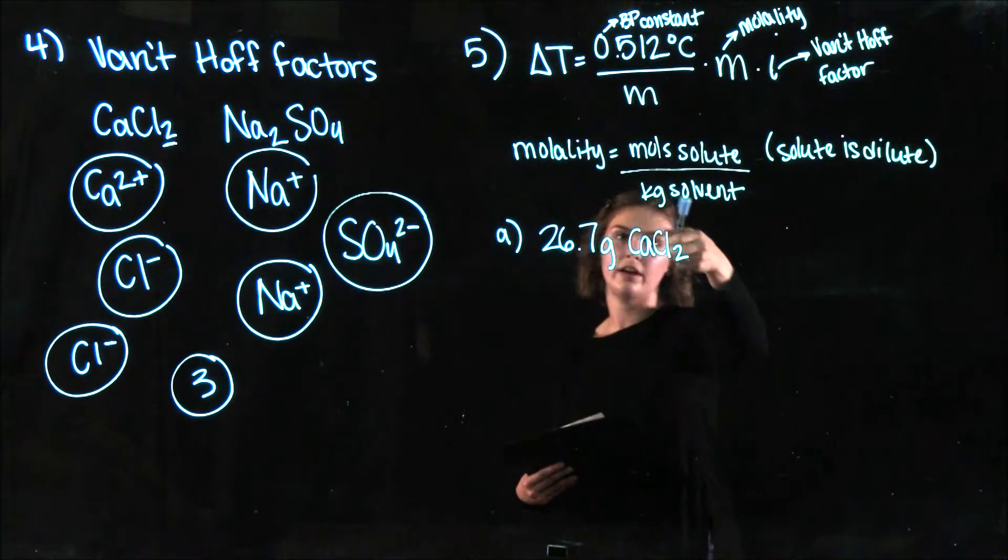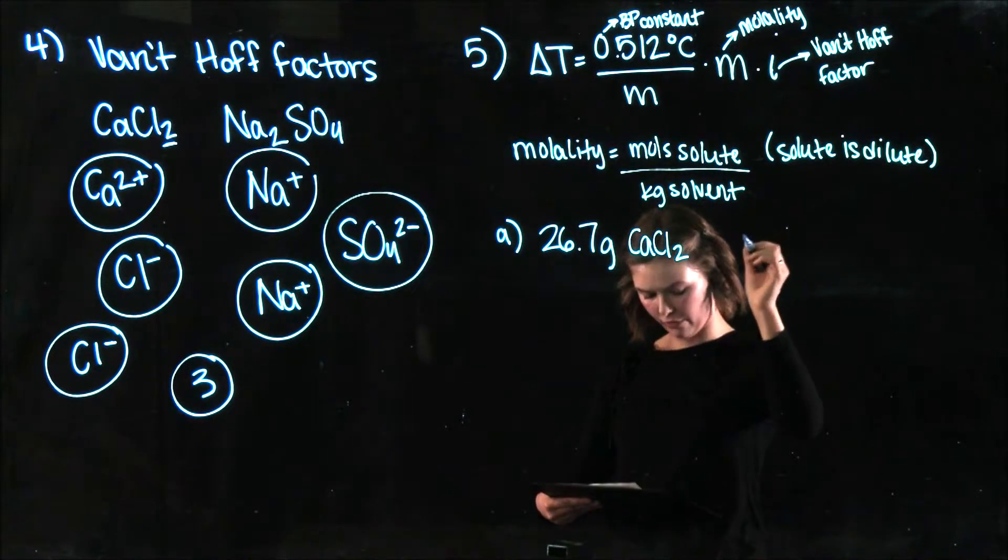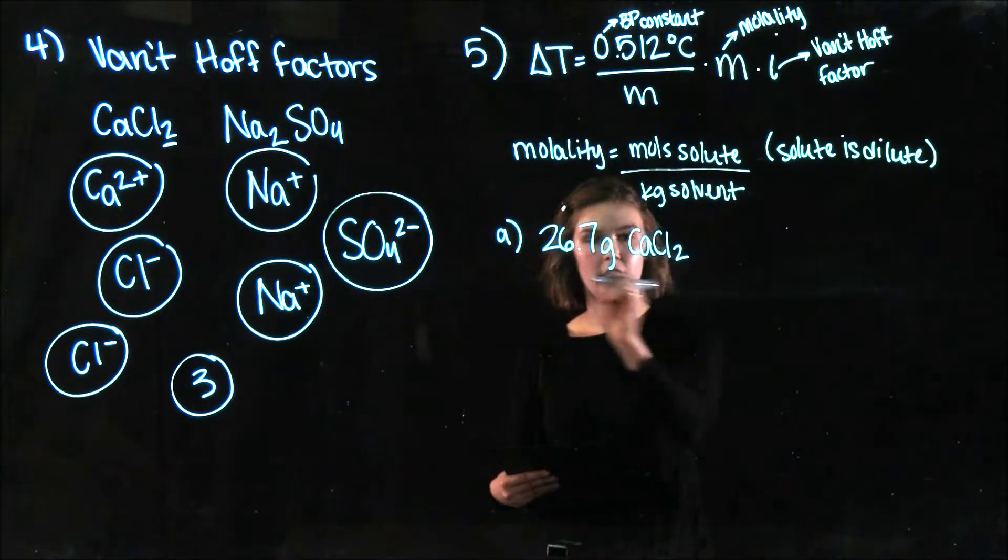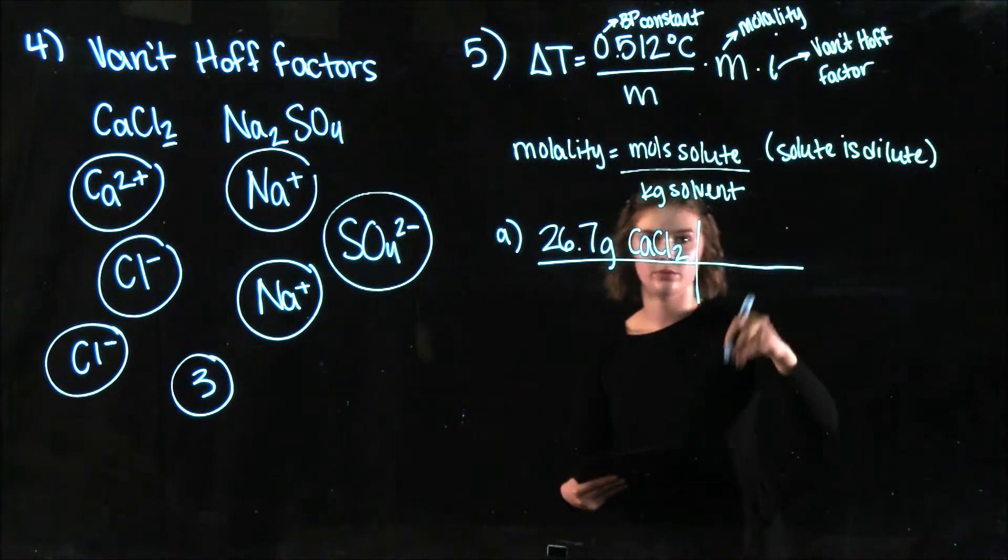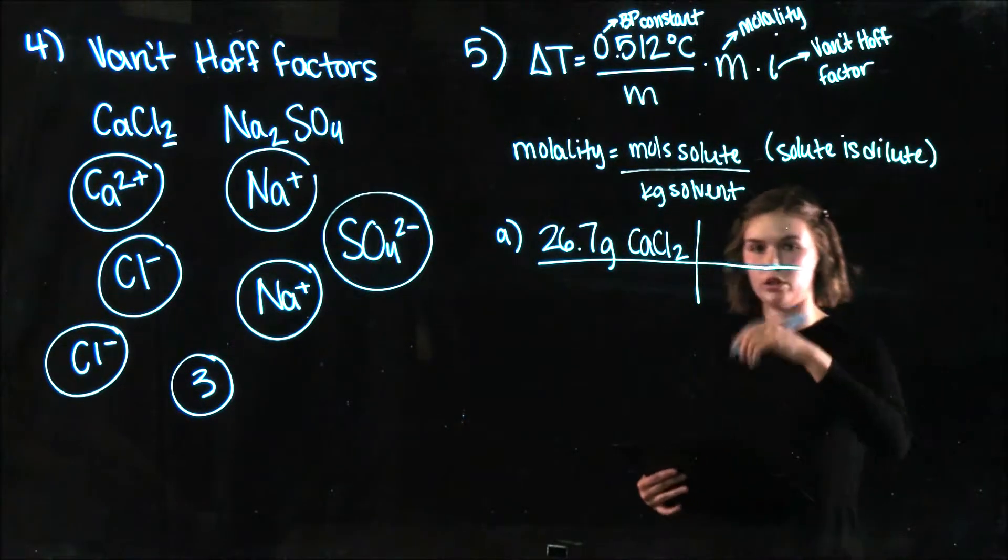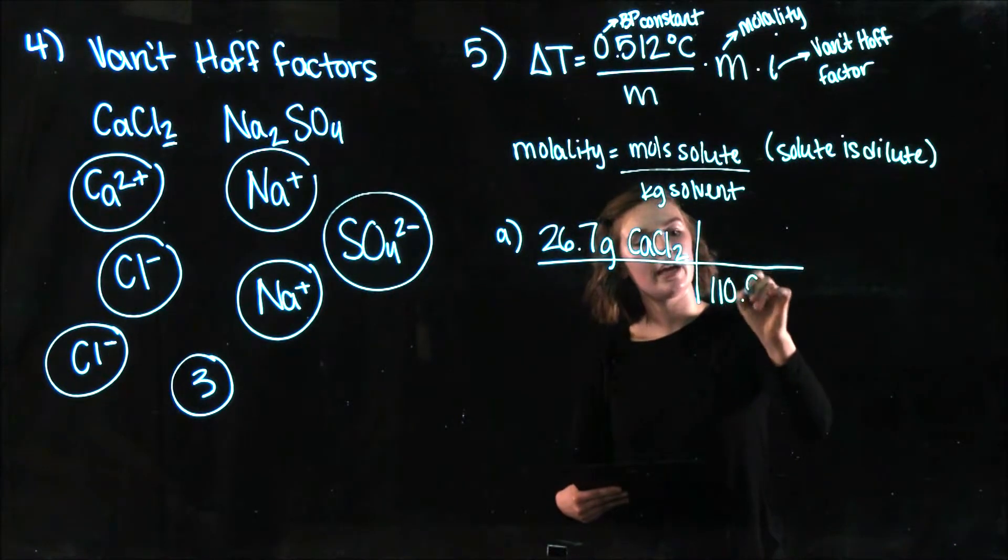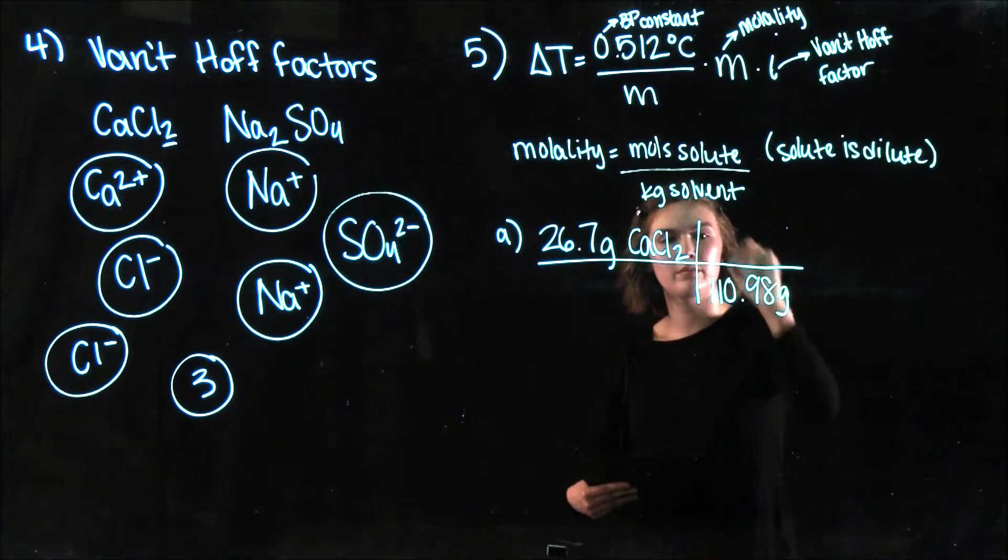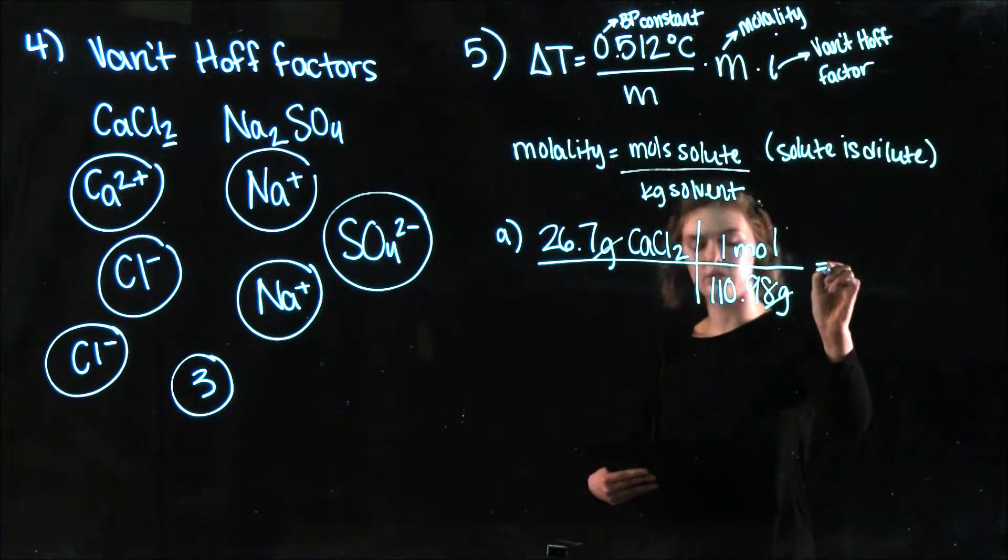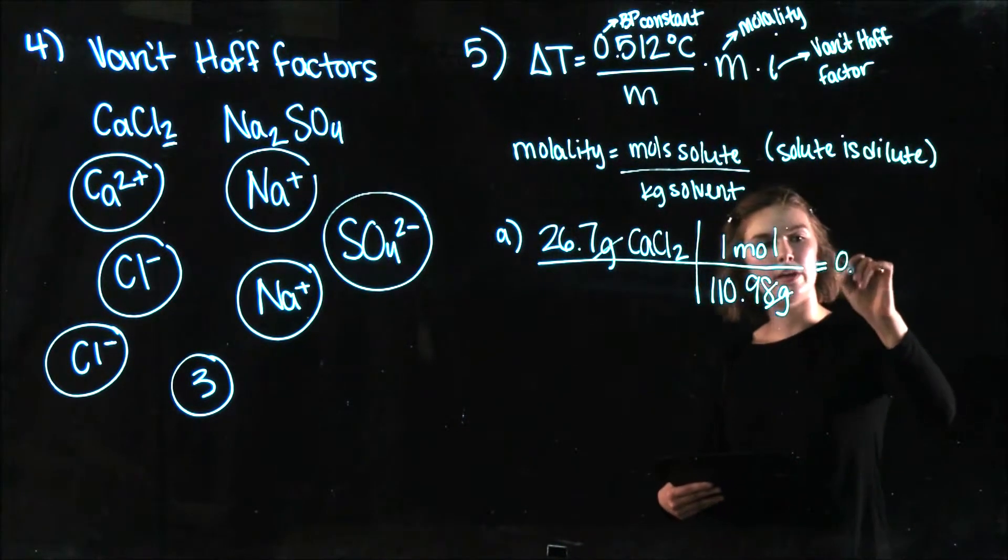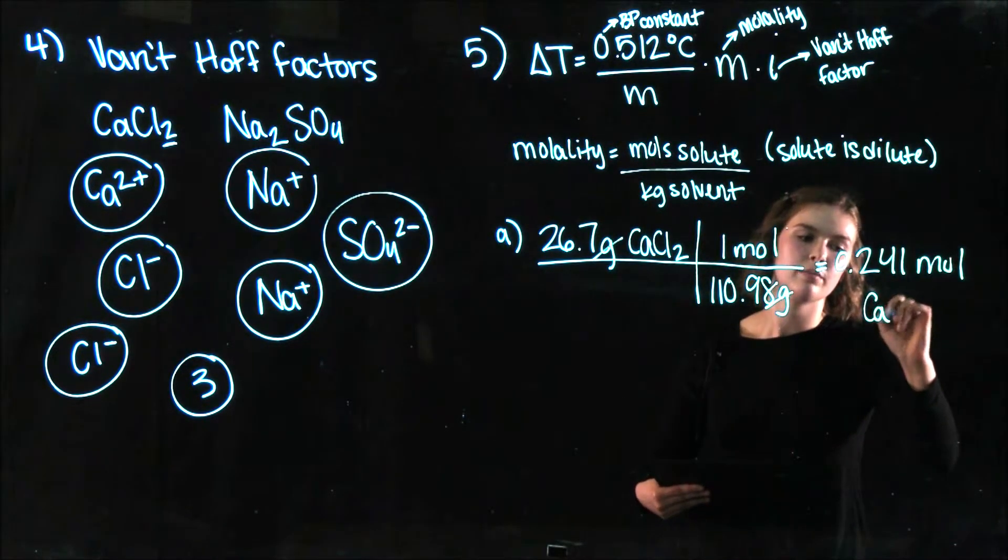And I need to figure out how many moles I have. So I'm going to say using my molar mass, which in this case I just looked up using periodic table. So it's going to be 110.98 grams per mole. So then we have this cancels and we're going to get 0.241 moles of calcium chloride.